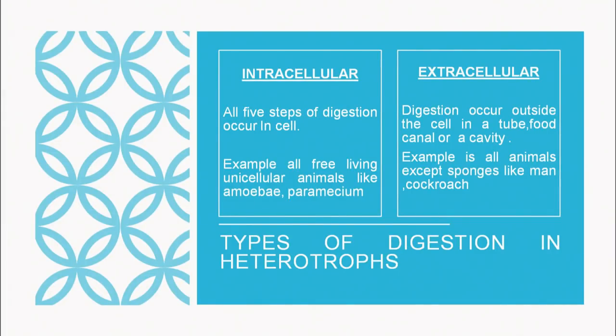Moving on to extracellular digestion — all multicellular animals show extracellular digestion. Digestion occurs outside the cell, in a tube-like structure or a canal or a cavity, like the alimentary canal open at two ends: mouth and anus. There are also organisms like hydra which show both types of digestion — intra as well as extracellular. Hydra captures food with the help of tentacles, digests it in the cavity of its body, and part of the digestion also takes place inside the cells lining the cavity.